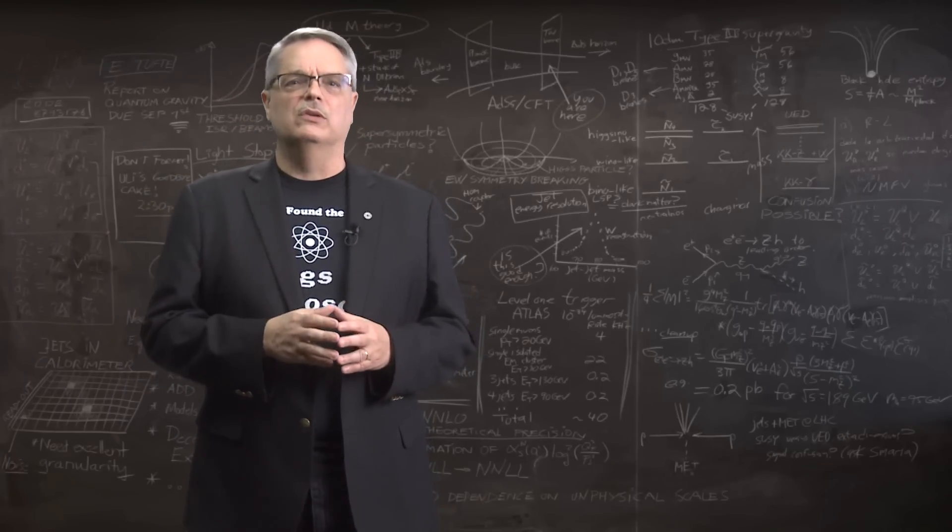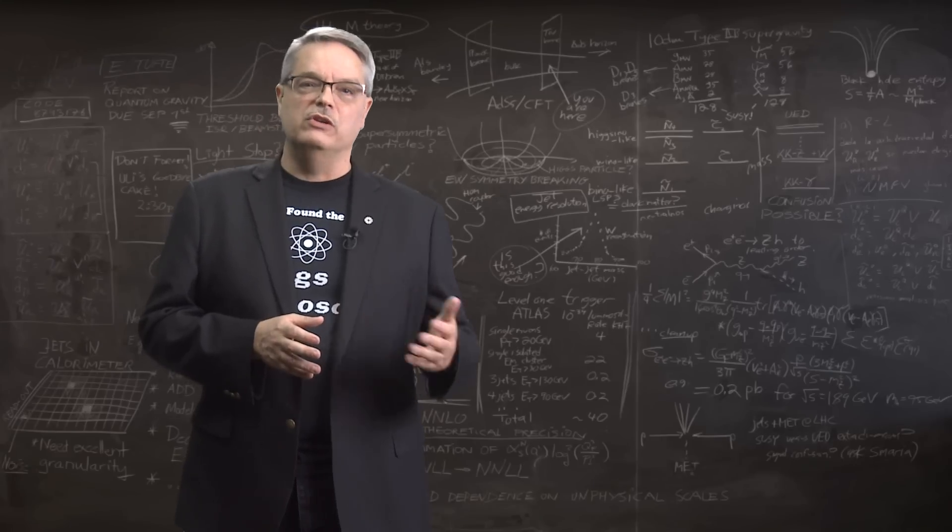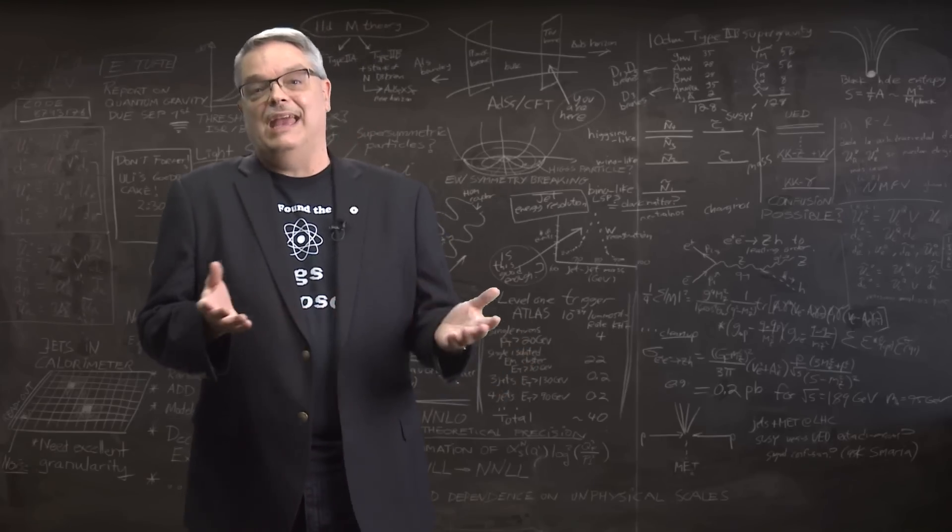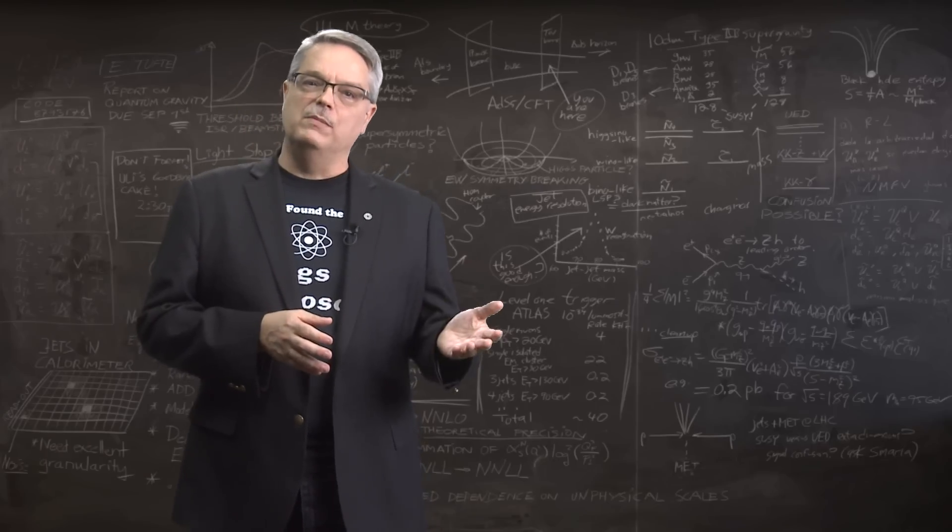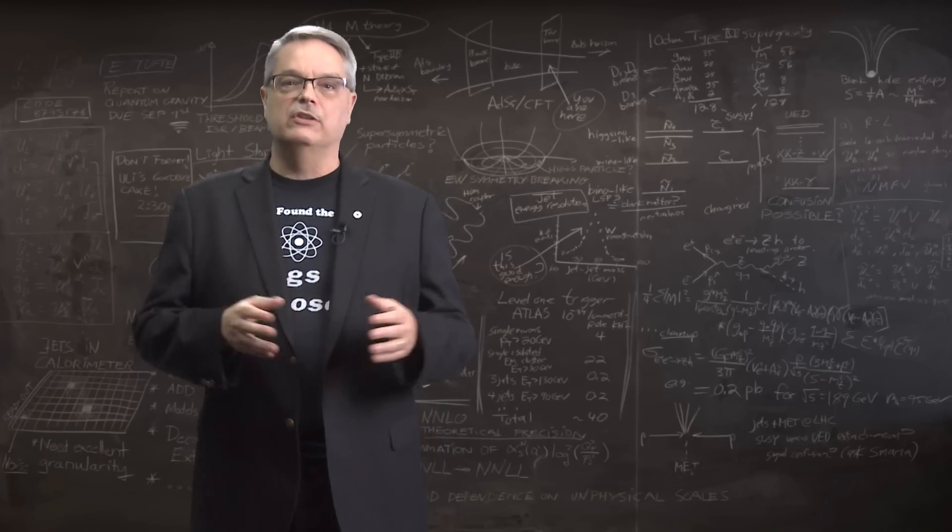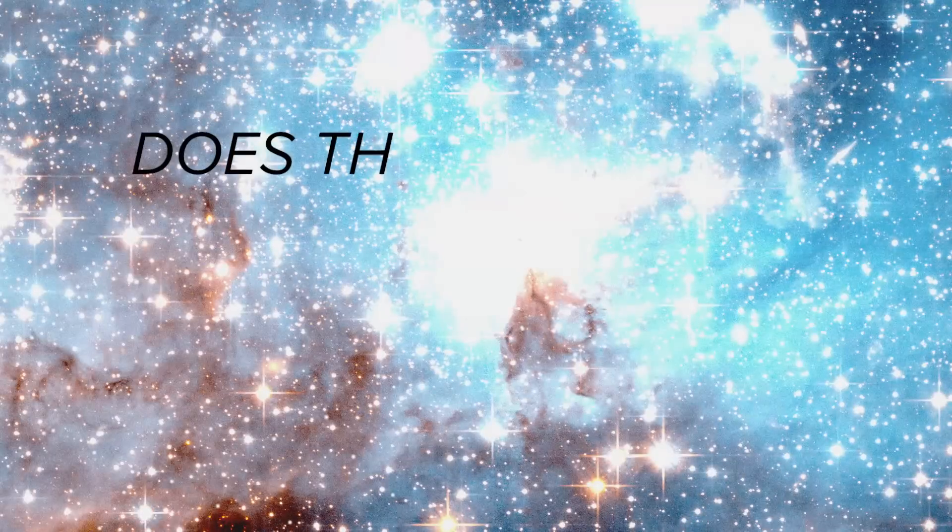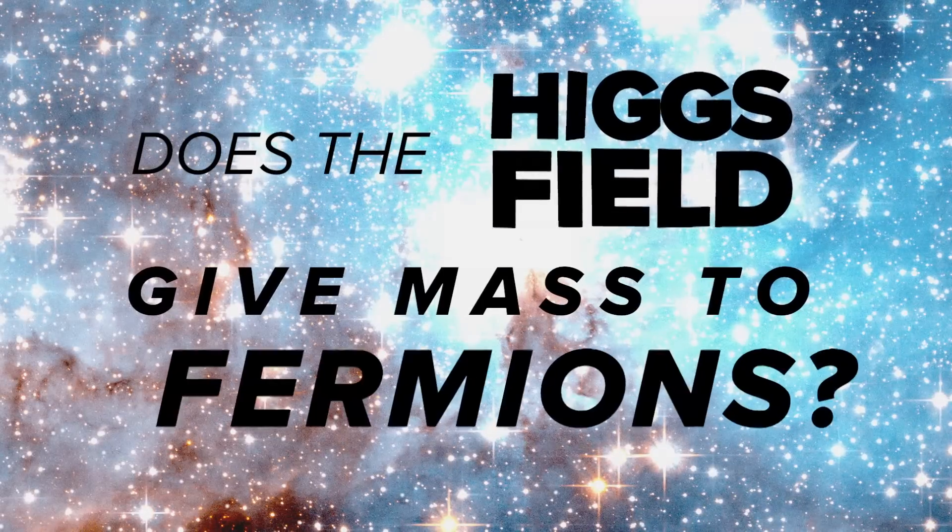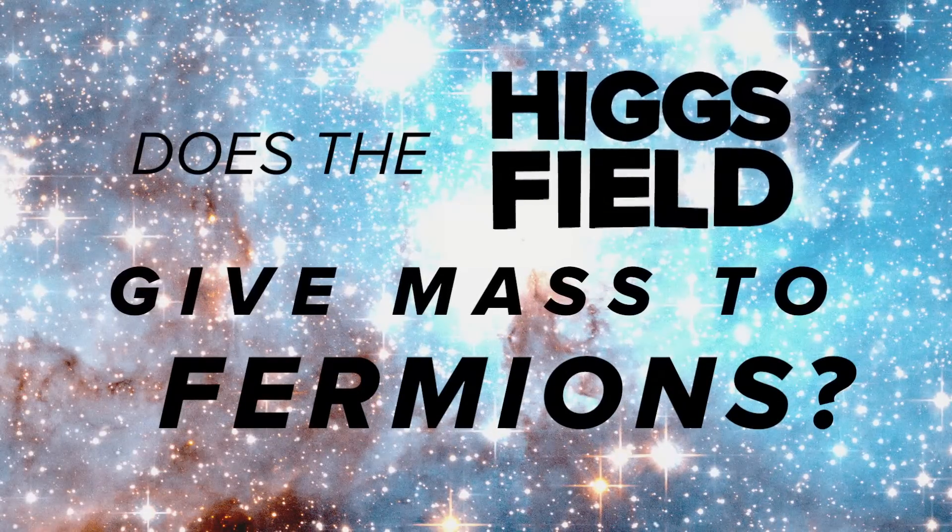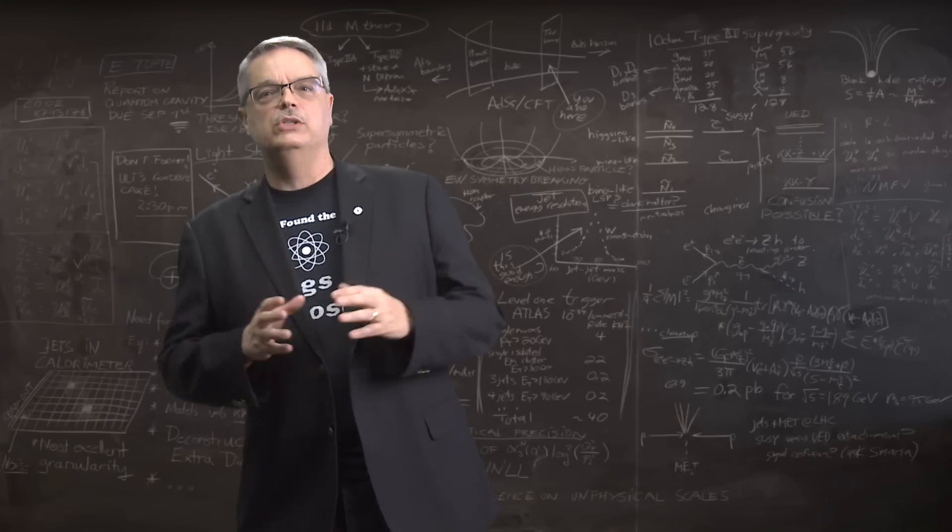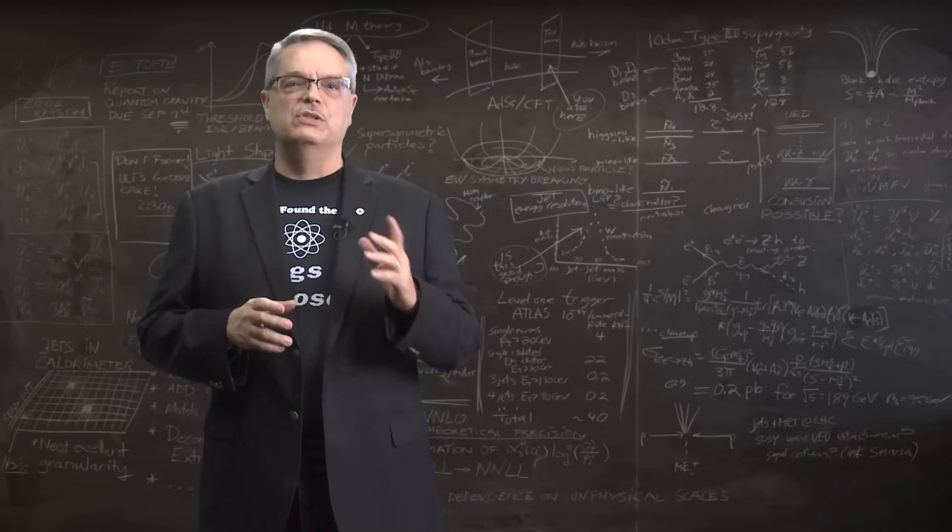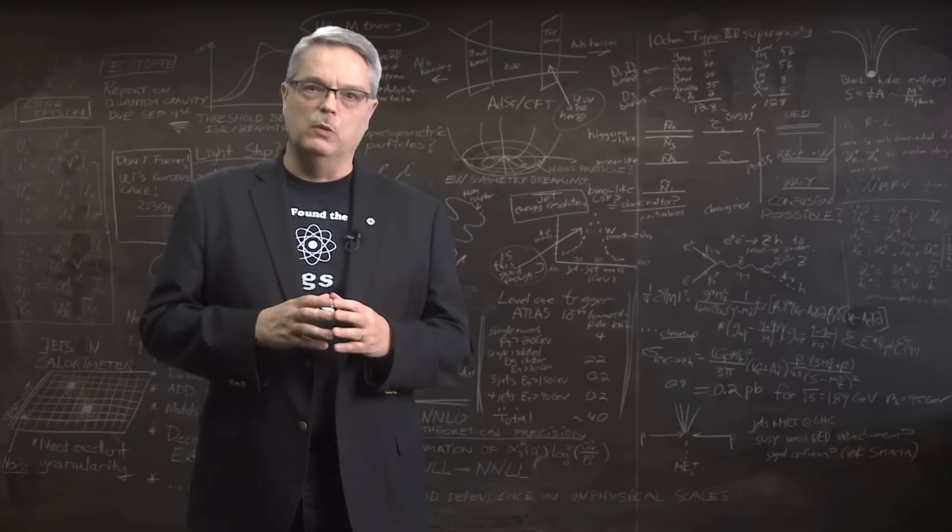But it would sure be economical if the Higgs field would also give mass to the fermions. It doesn't have to be that way. The mass of fermions and the heavy bosons could have gotten their mass from different sources. So a very important test was to see if the fermions also got their mass from the Higgs field. So how would you do that? Well, to do that, you have to remember a very crucial point.